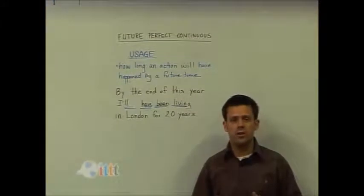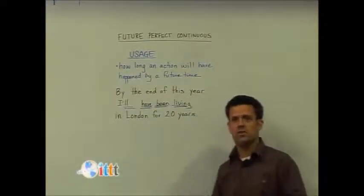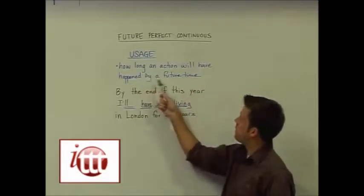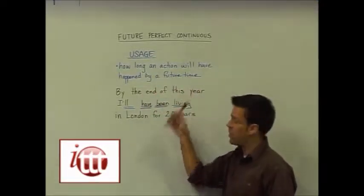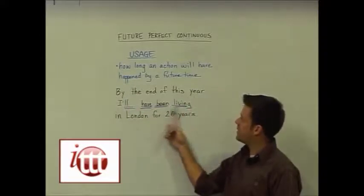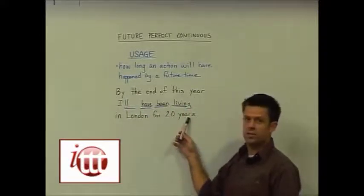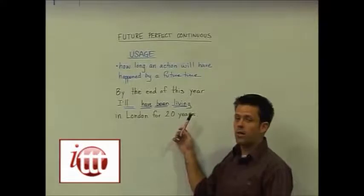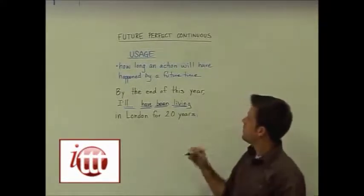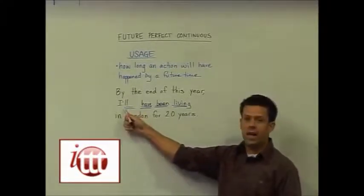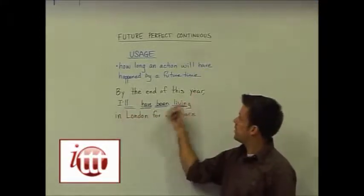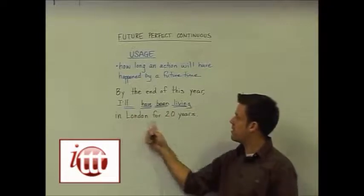The usage for the future perfect continuous tense is to show how long an action will have been happening by a future time. Our example sentence reads: 'By the end of this year, I'll have been living in London for twenty years.' So we're talking about a point in the future — by the end of this year — and how long the action will have been happening by that time.